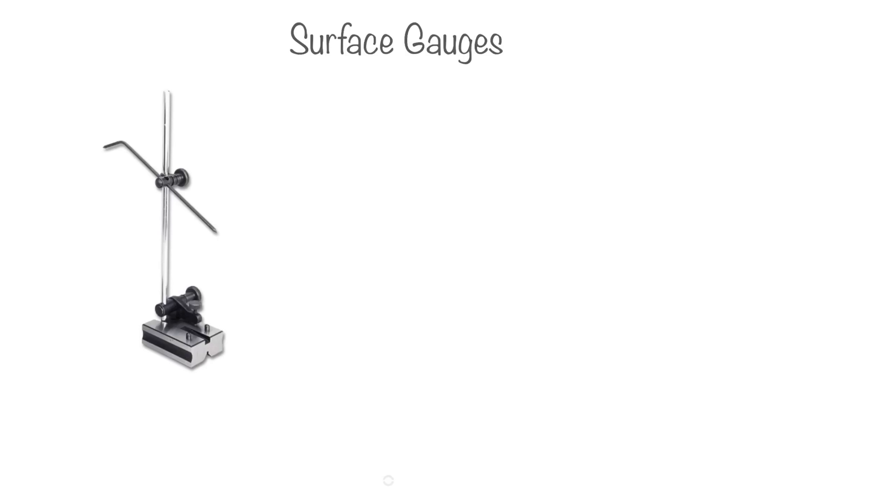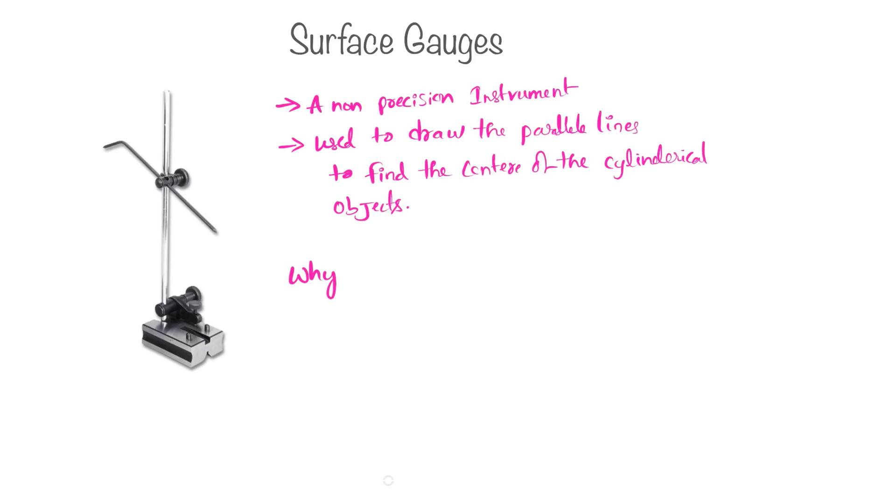Hey guys, welcome to extradition.com. So what is a surface gauge? The surface gauge is a non-precision instrument used to scribble the parallel lines to find the center of cylindrical objects. Why do we need to draw parallel lines or find the center of cylindrical objects?